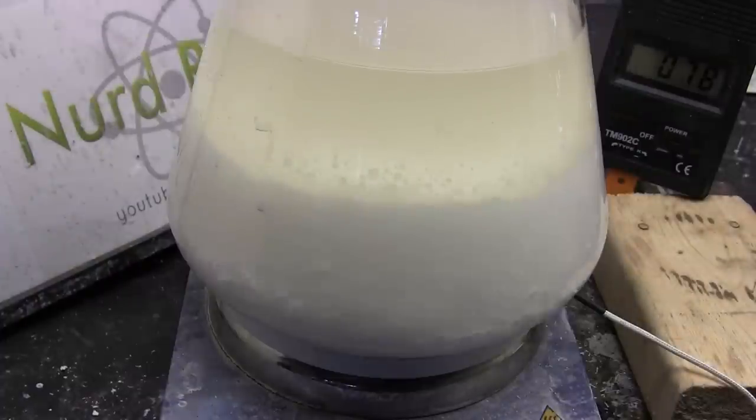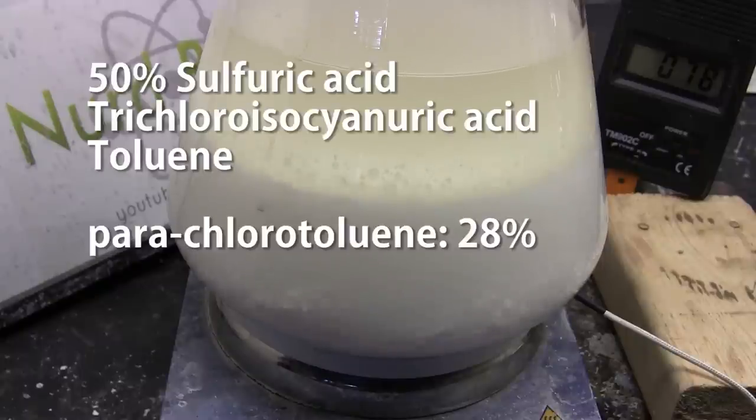The worst method I found was reacting a 50% sulfuric acid solution with toluene and trichloroisocyanuric acid. While it did produce chlorotoluenes in good yield only 28% was the desired para isomer. The rest was the unwanted ortho-isomer.